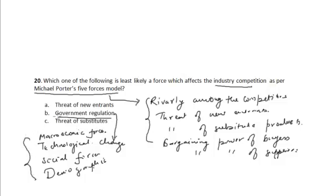they are not a part of Michael Porter's five forces model. Hence, the correct option is option B, government regulation, because it is not a part of Michael Porter's five forces model.